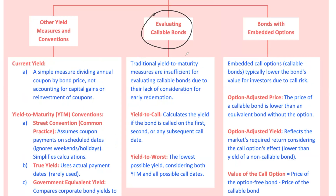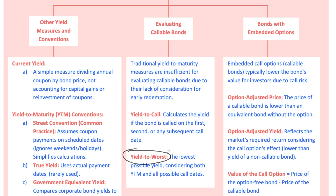Now let's switch gears to bonds with embedded options, like callable bonds. A callable bond gives the issuer the right to buy back the bond at predetermined dates and prices, usually after a no-call period. This is great for the issuer, but not for the investor who faces call risk — the risk of early redemption. Yield to call, YTC, calculates the yield if the bond is called on the first, second, or any subsequent call date; it's usually lower than the YTM. Yield to worst, YTW, is the lowest possible yield considering all call dates and the YTM — a conservative but clear worst-case measure.